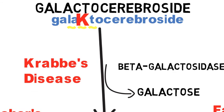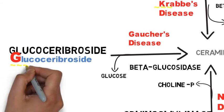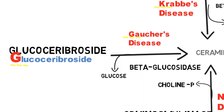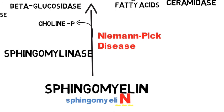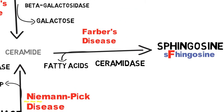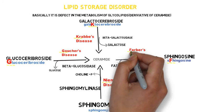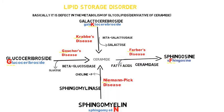For memorizing: the capital K in galactocerebroside denotes Krabbe's disease; the capital G in glucocerebroside correlates with Gaucher's disease; the capital N in sphingomyelin correlates with Niemann-Pick disease; and the capital F correlates with Farber's disease. These capital letters lead us to the related lipid storage disorders.